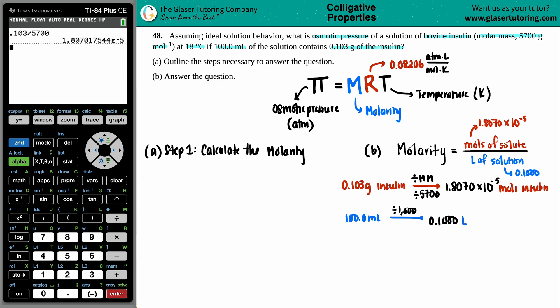So we have that number. Now we have the numerator and the denominator. We can solve for the molarity. So capital M equals the moles, which was the 1.8070 times 10 to the negative 5th, divided by the liters, 0.1000.